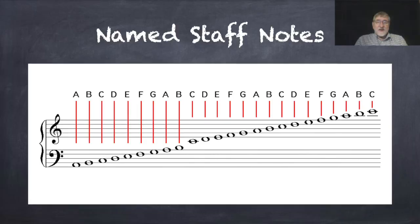Hello, everyone, and welcome to a Music Theory Minute. Notes are named using the first seven letters of the alphabet. After G, the seventh note, the alphabet starts over. The distance from one A on the staff to the next A is an octave. It is one octave from any note to the next note with the same name.